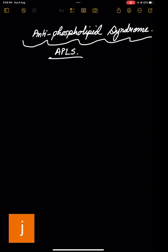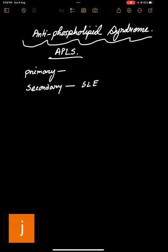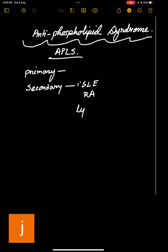This could be either primary, meaning there is no other predisposing factor or causes. Another one, it could be secondary to other diseases. Like what? Like it could be associated with SLE. It could be other autoimmune disorders it could be associated with. Like you have a question with RA patients also. Even with some lymphoproliferative disorder or sometimes rarely with phenothiazine.